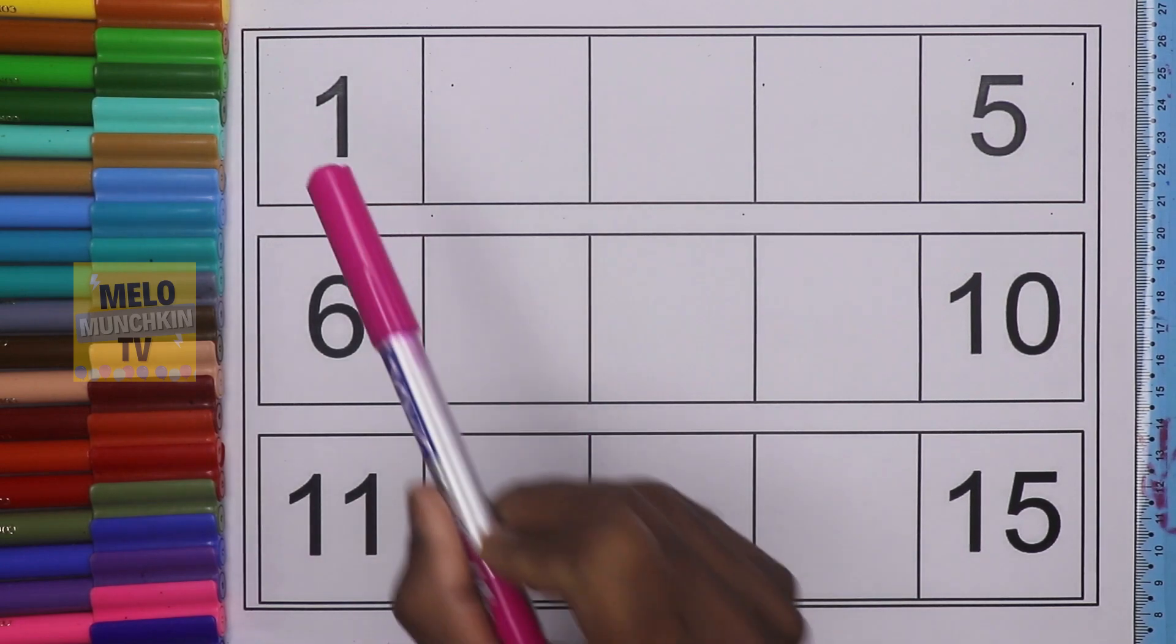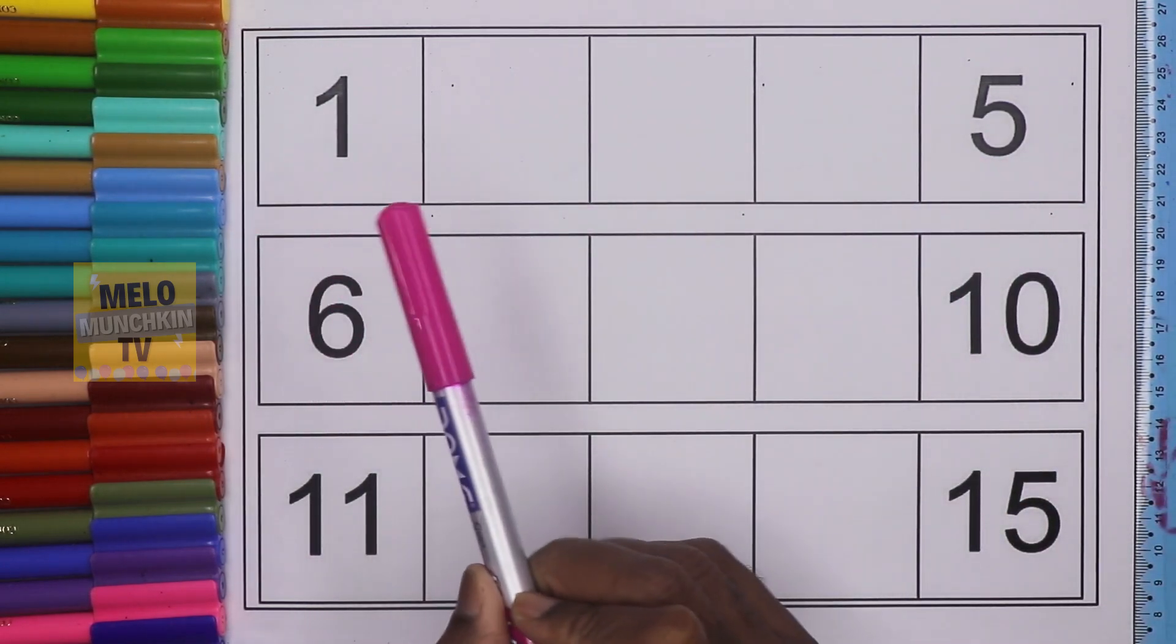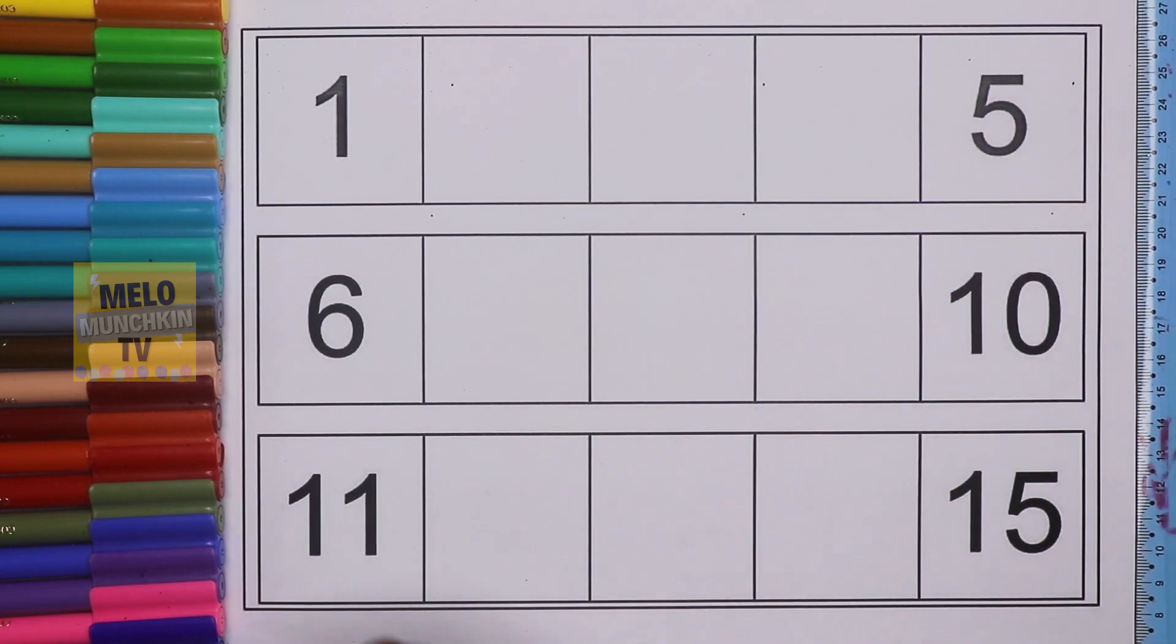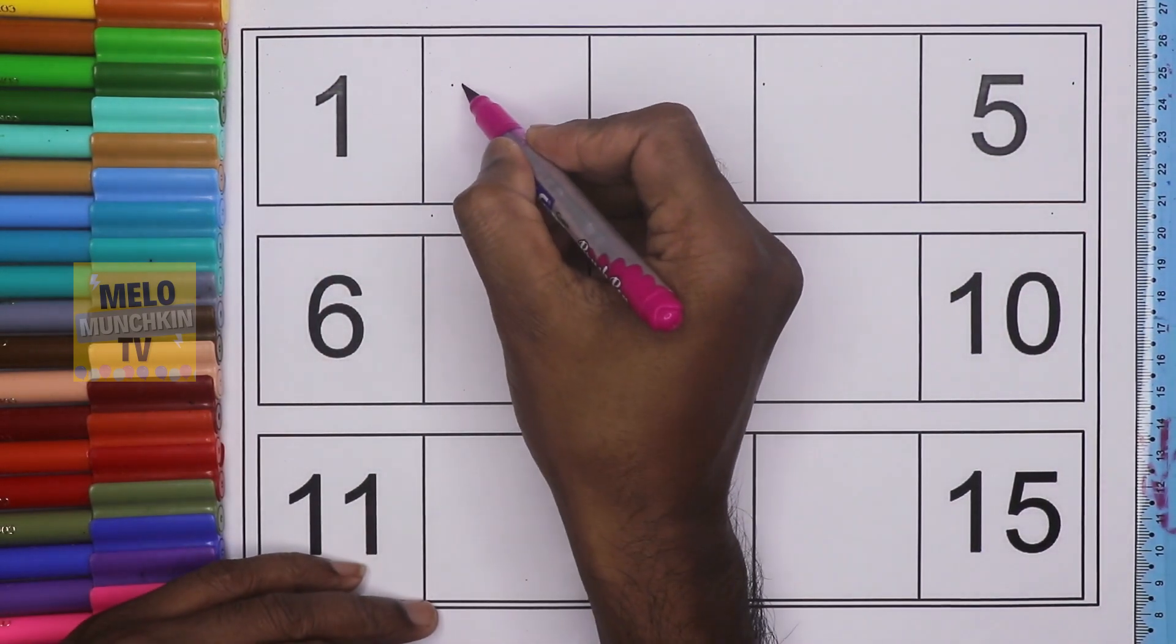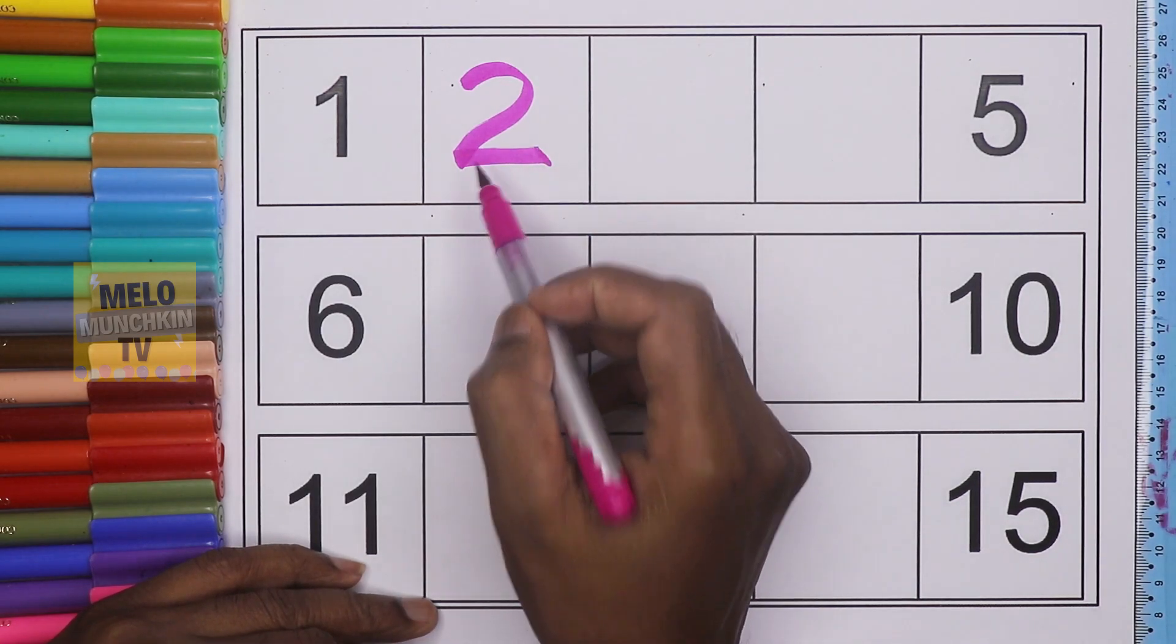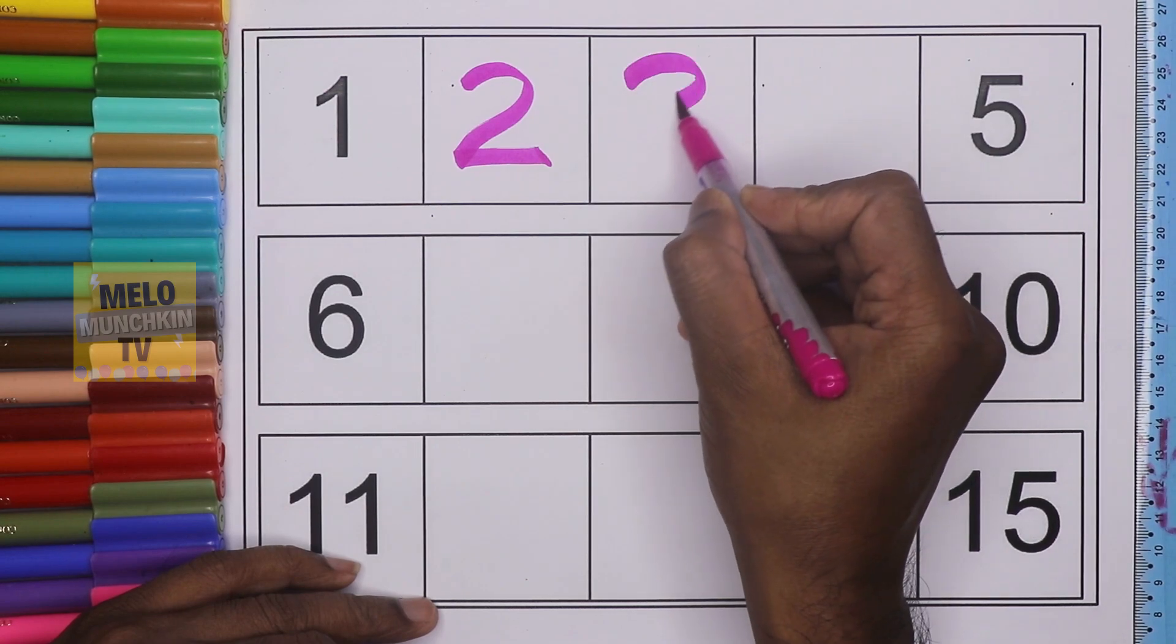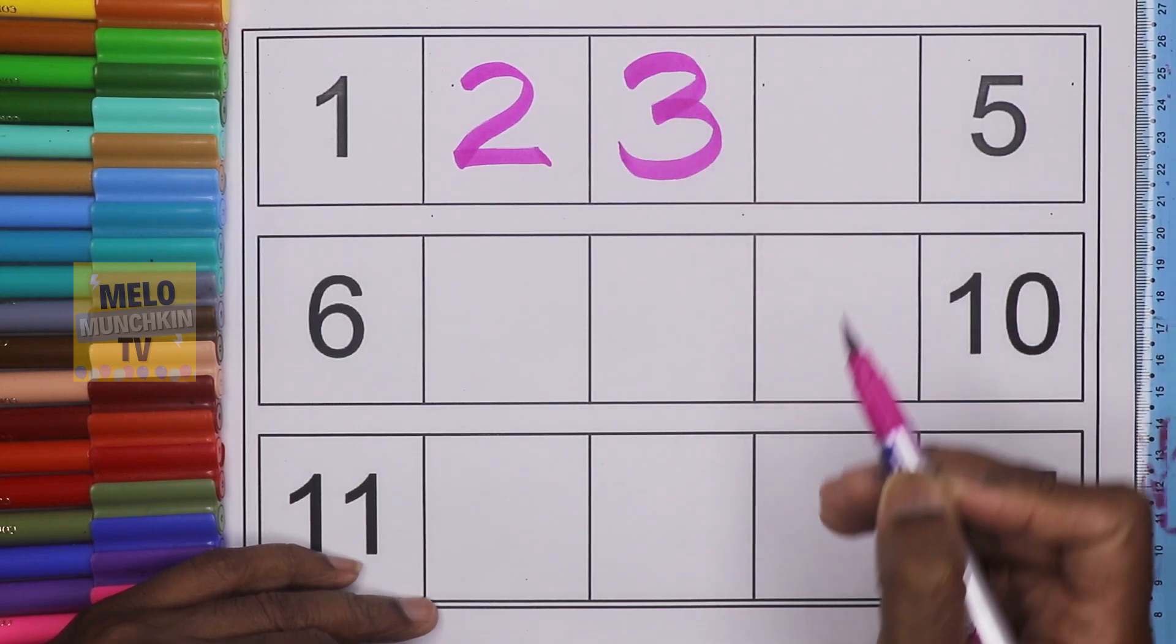In the first line, we need to find out numbers between 1 and 5. What comes after 1? It is 2, T-W-O, two. And after 2 it is 3, T-H-R-E-E, three.